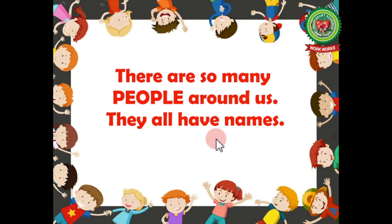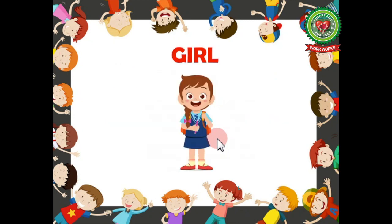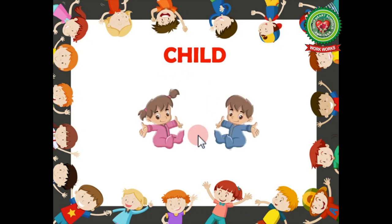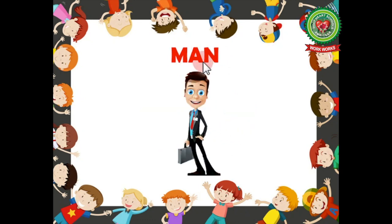As we meet or see a number of people around us, we call them with different names. She is a girl — g-i-r-l, girl — name of a person, so noun. Baby — b-a-b-y, baby — name of a person, so noun. Child — c-h-i-l-d, child — name of a person, so noun. Man — name of a person, so noun.